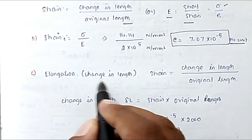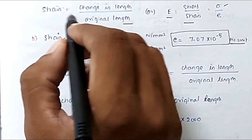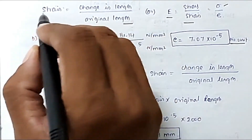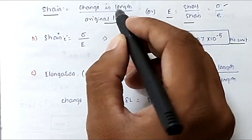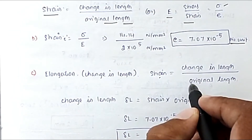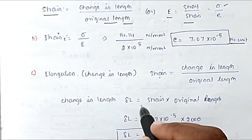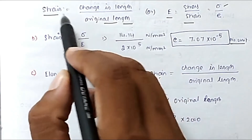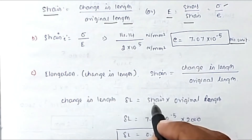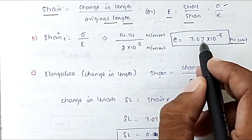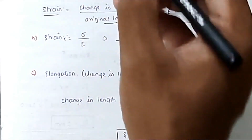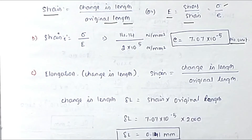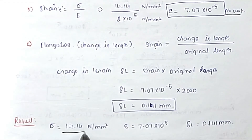Now we find elongation, which is the change in length ΔL. Using strain = ΔL / L, we rearrange to get ΔL = strain × L. Substituting strain = 7.07×10⁻⁵ and original length L = 2000 mm, we get ΔL = 7.07×10⁻⁵ × 2000 = 0.14 mm.